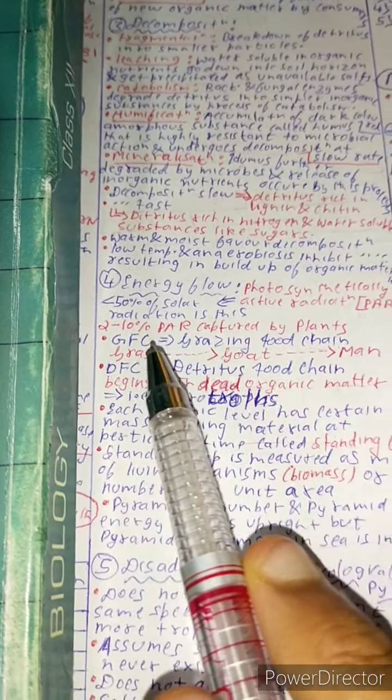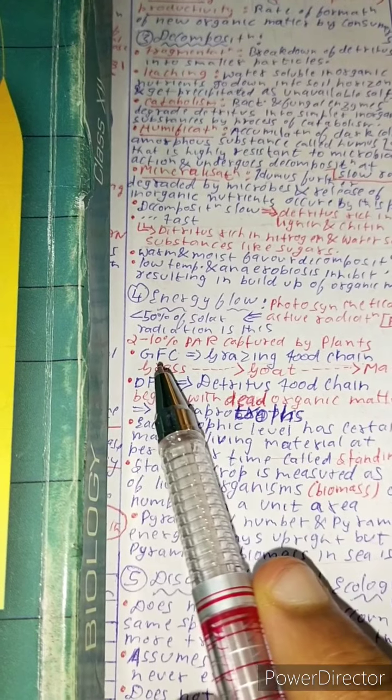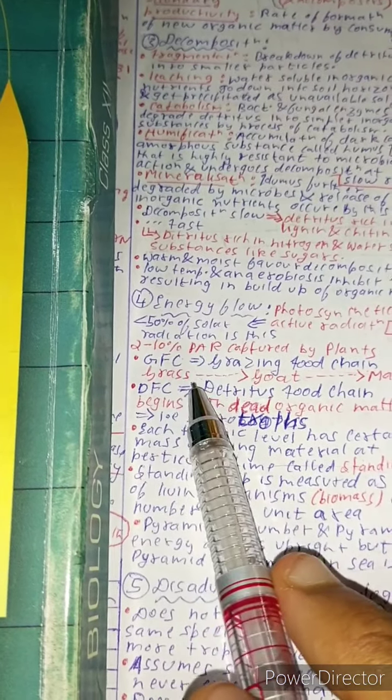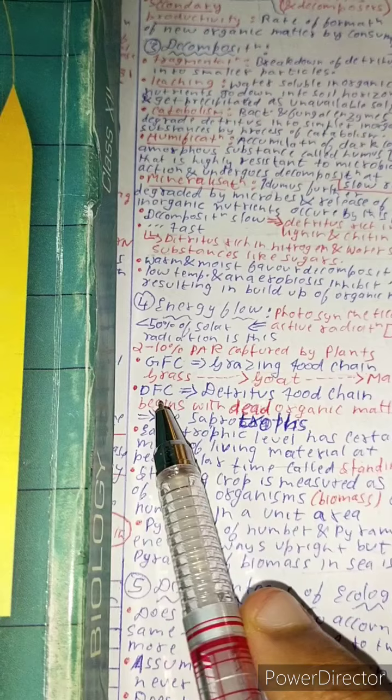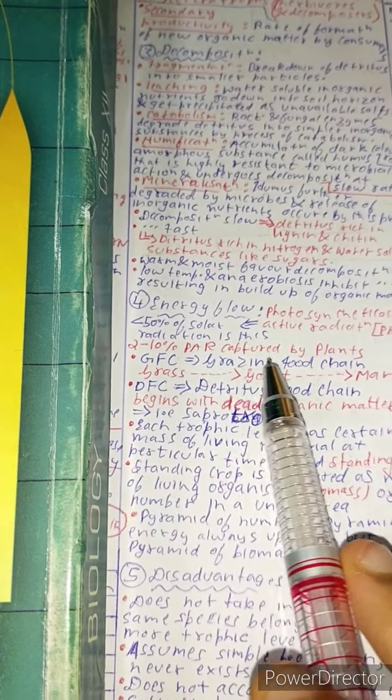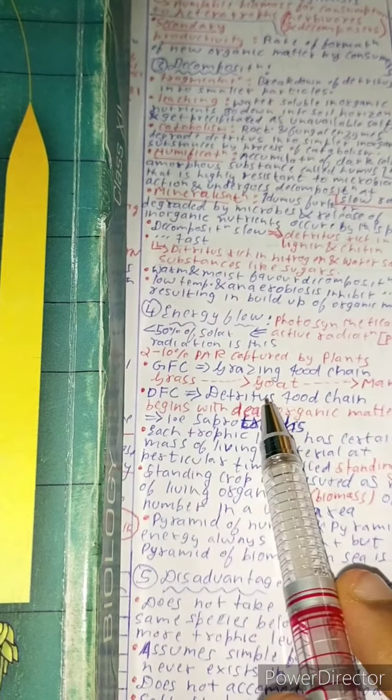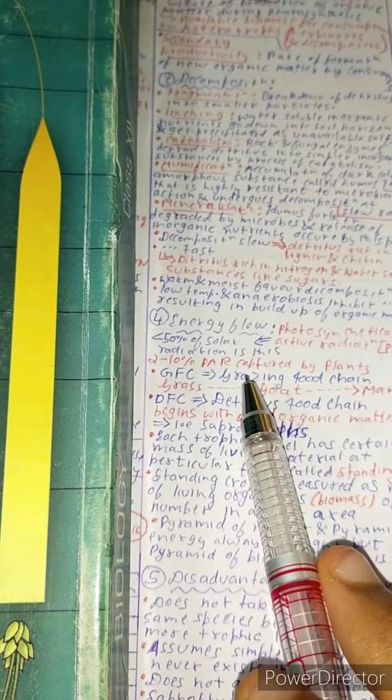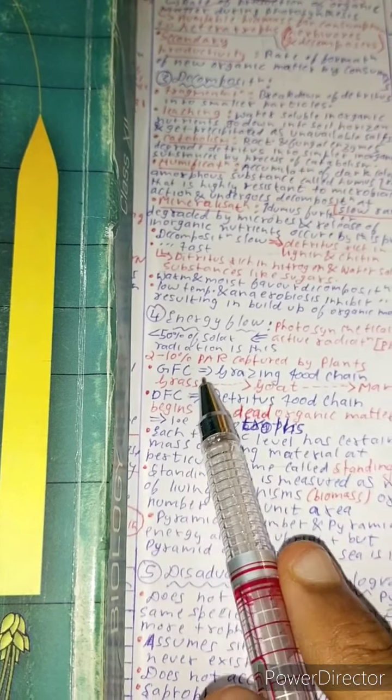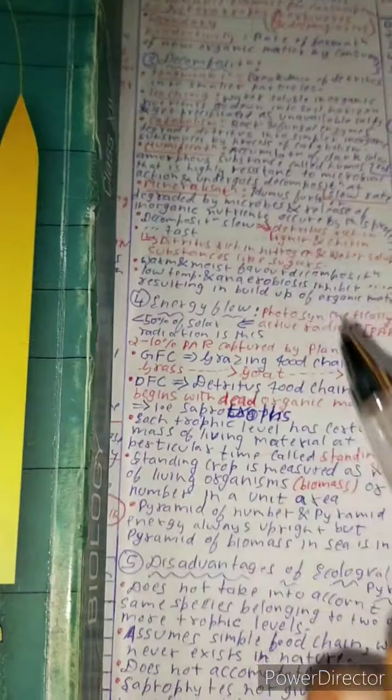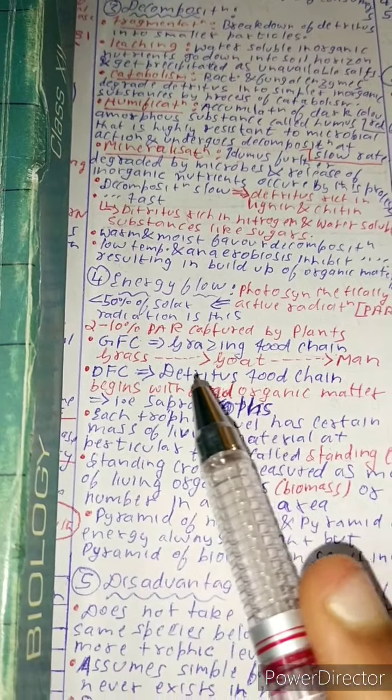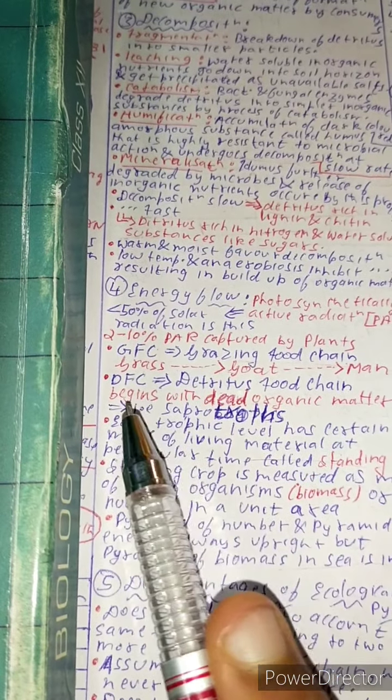Now let us see energy flow, how energy flow occurs. One is GFC and DFC. GFC is called grazing food chain and DFC is called detritus food chain. Grazing food chain is a simple food chain like grass, after which the goat eats grass and man eats goat. But detritus food chain begins with dead organic matter, that is saprophytes who start consuming stuff.